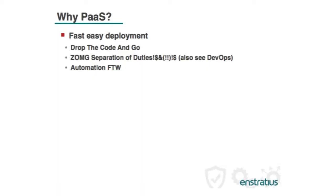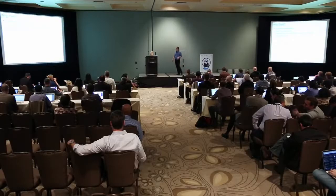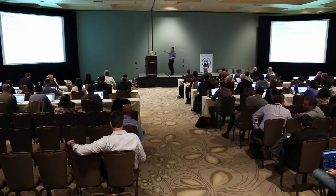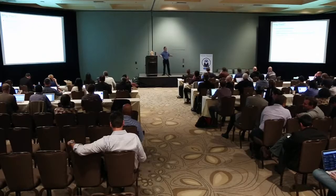Obviously the question is, why do people do PaaS? Fast, easy deployment — that's always a good thing. You just put the code in, magic happens, and your app is up and running. One of the biggest complaints I hear about DevOps and PaaS in particular is, oh my God, it's the end of the world. We have lost separation of duties. We're going to violate security things right, left, and center. How will we control things?